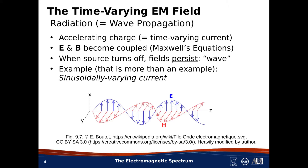Maxwell's equations, which govern classical EM, tell us that when you accelerate charge, the electric and magnetic fields become coupled — that is, they no longer behave independently. Literally, the time-varying electric field becomes the source of a time-varying magnetic field, and the time-varying magnetic field becomes the source of a time-varying electric field. Should you subsequently turn off the time-varying current, then the fields will persist.